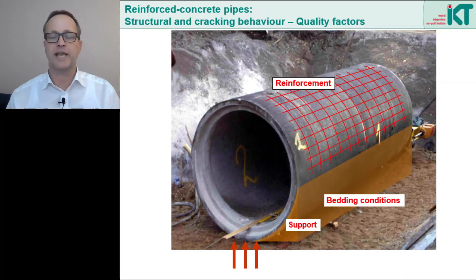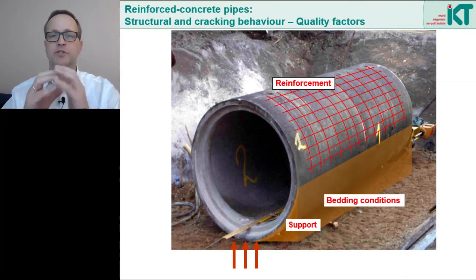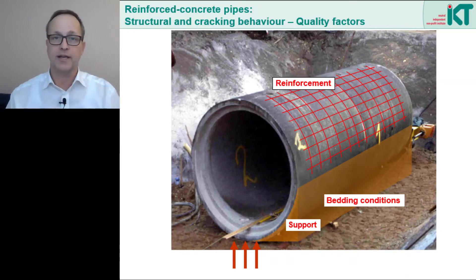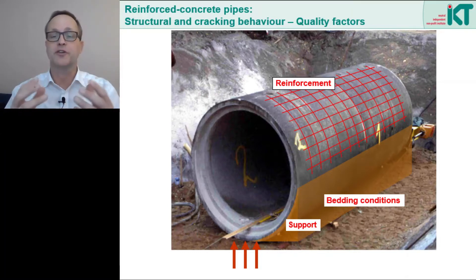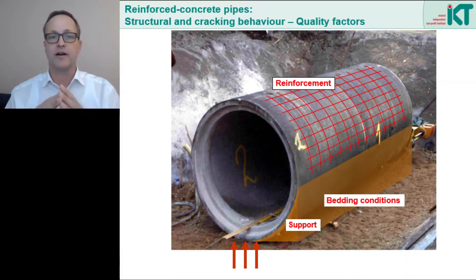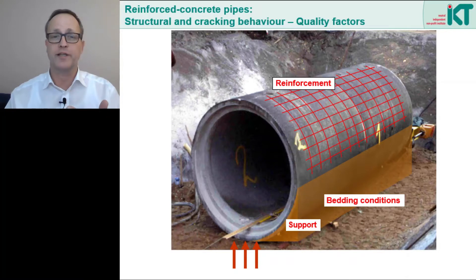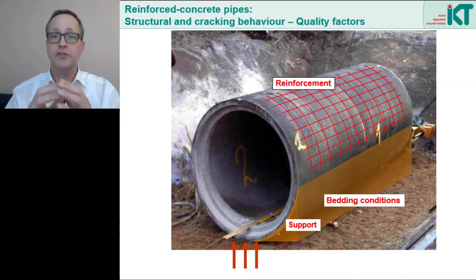Usually two reinforcement cages are produced: an inner cage and an outer cage. The inner reinforcement should be able to absorb the tensile stresses on the inside of the pipe, and the outer reinforcement should take the tensile stresses on the outside. From the statics, the tensile stresses on the inside occur in the pipe crown and in the pipe bottom. The tensile stresses on the outside occur in the so-called spring line, where the horizontal extremes to the right and left are. Since both reinforcement cages run over the entire circumference, the inner reinforcement can always bear the internal tensile stresses and the outer reinforcement the external tensile stresses, regardless of how the pipes are positioned in the trench.